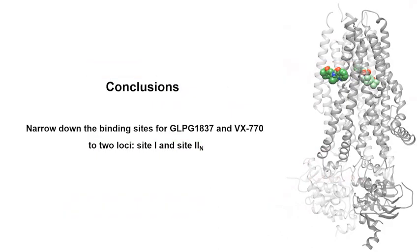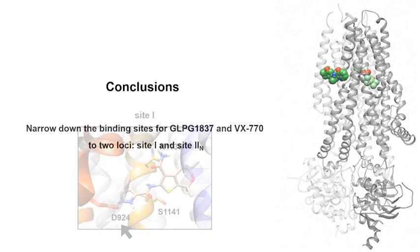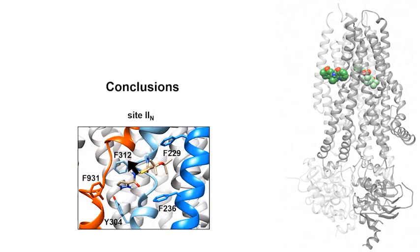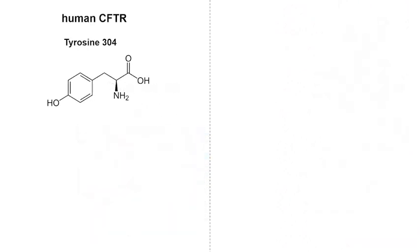In summary, we narrowed down the potential binding sites for VX470 and GLPG1837 to two specific locations in the transmembrane domains of CFTR protein. The amino acids involved in binding include D924, N1138, and S1141 in site 1, and F312, F931, and Y304 in site 2N.